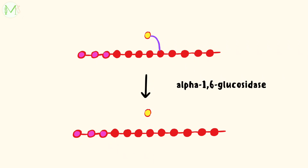The branch point is free at this point. Alpha-1,6 glucosidase enzyme, also known as the de-branching enzyme, can hydrolyze the remaining glucose unit held in the alpha-1,6 linkage at the branch point. This glucose residue is released as free glucose.